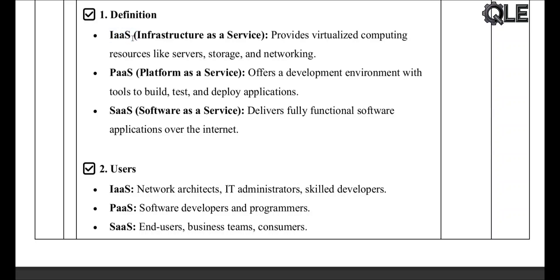IaaS — Infrastructure as a Service: you rent virtual servers, storage, and networks, and you manage everything else. PaaS — Platform as a Service: you get a ready-made environment to build and run applications; the platform is managed for you. SaaS — Software as a Service: you use complete software apps online — no setup, no coding needed.